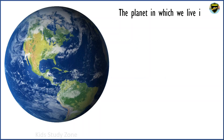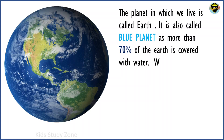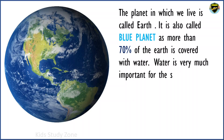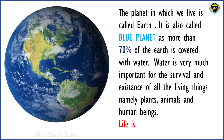The planet in which we live is called Earth. It is also called the Blue Planet, as more than 70% of the Earth is covered with water. Water is very important for the survival and existence of all living things, namely plants, animals and human beings. Life is impossible without water.